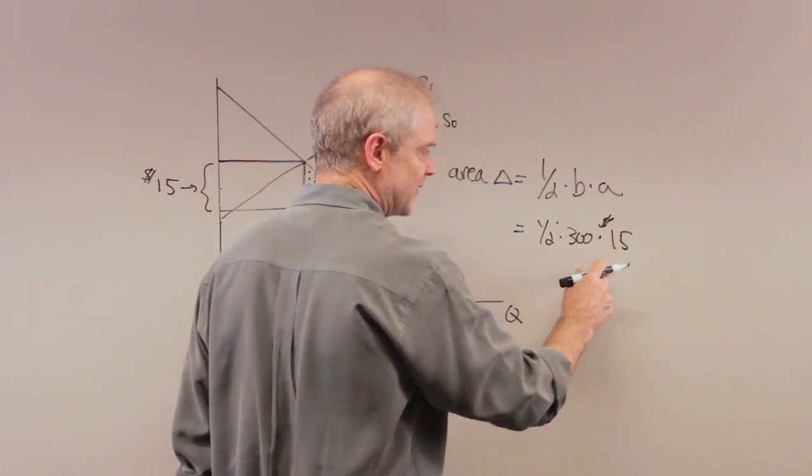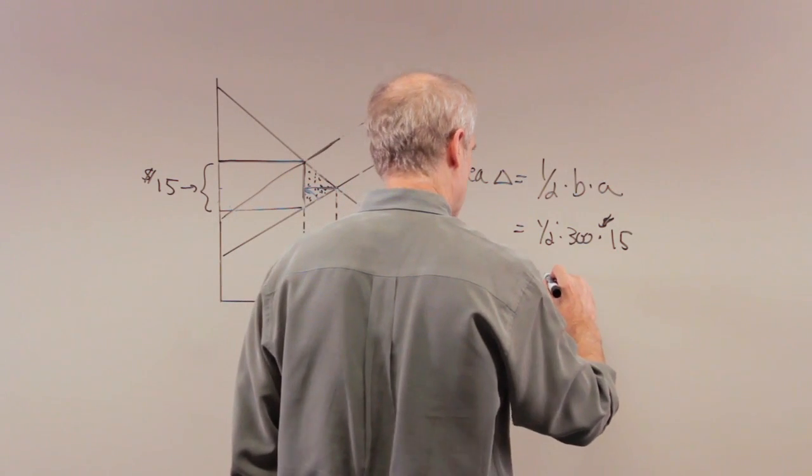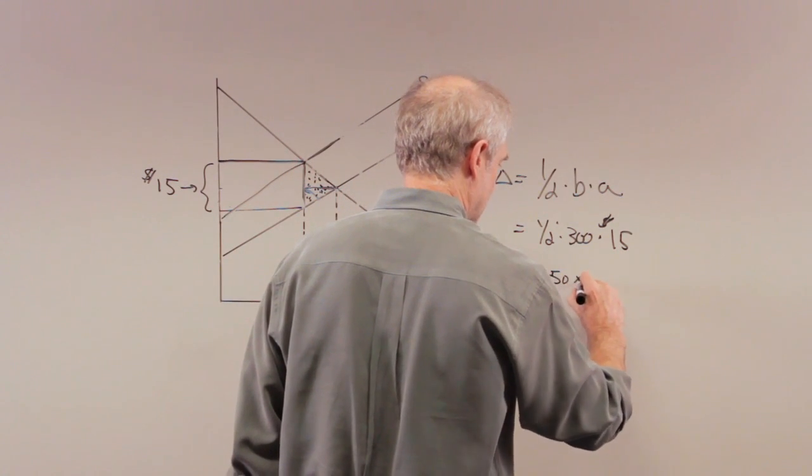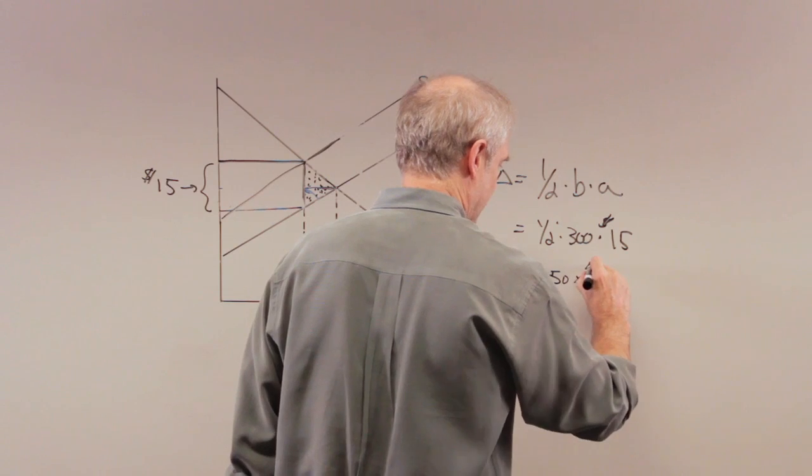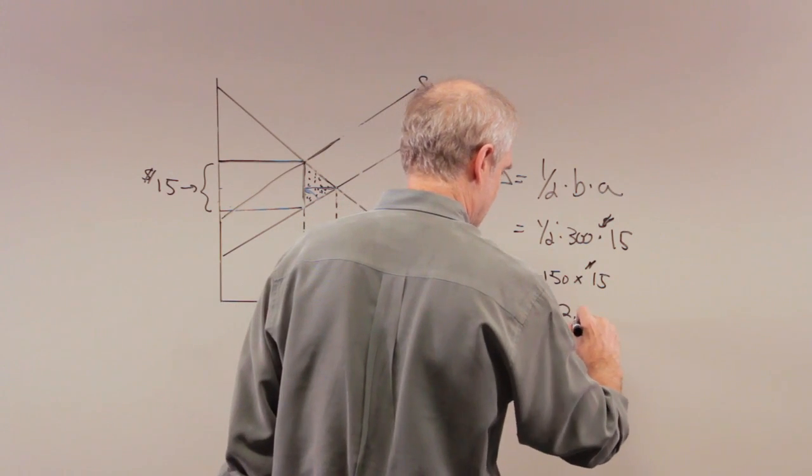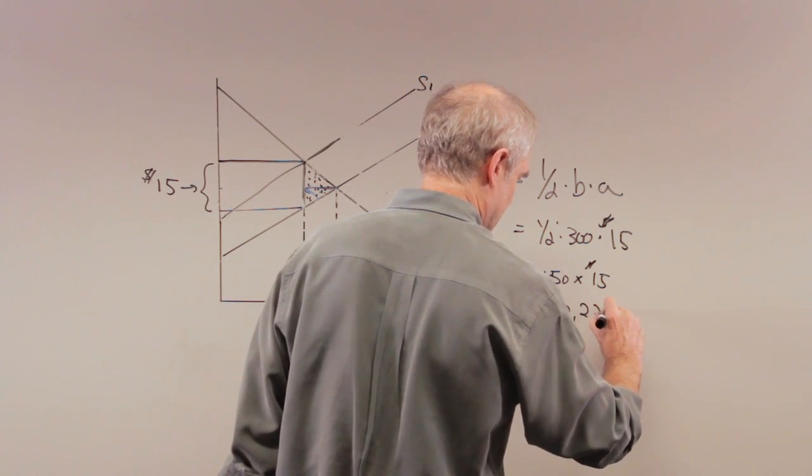So now I've got 1 half 300 times 15, which is equal to 150 times $15. And 15 times 15 is... 2,250.